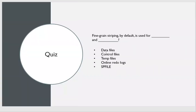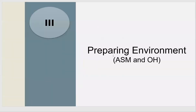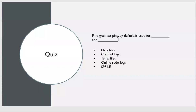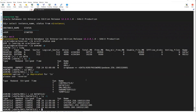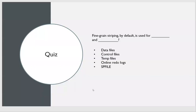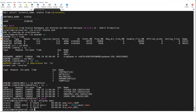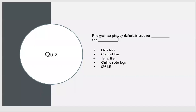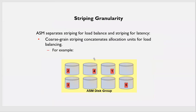That's it for ASM. We have seen this chapter — we created our ASM instance, database instance, Oracle home, and everything. We will get into some lab demonstration on disk groups and management. That's it for ASM architecture and ASM understanding.